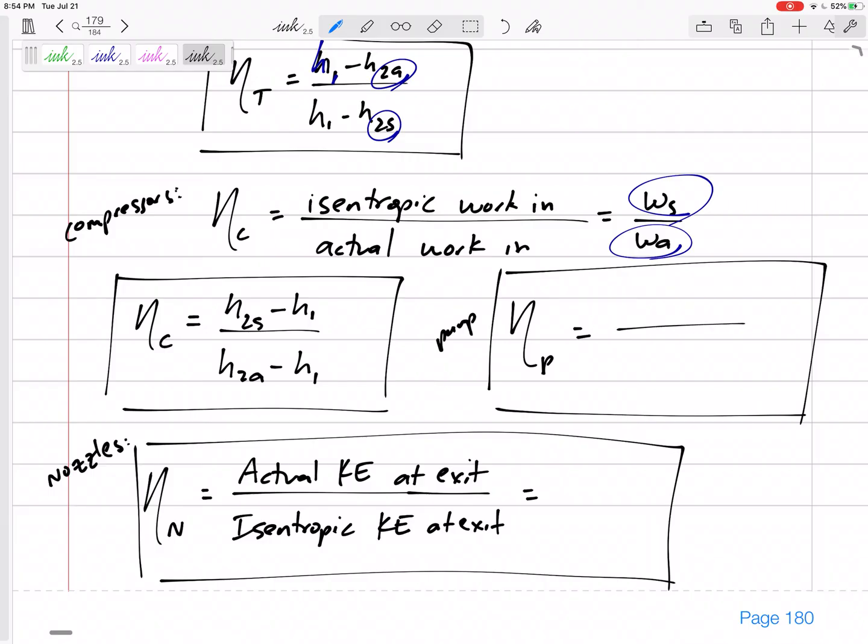For a pump, the isentropic work is V (lowercase V) times P2 minus P1, over H2 actual minus H1. So another equation, kind of similar. Instead of H isentropic minus H1, we change that to V times P2 minus P1.